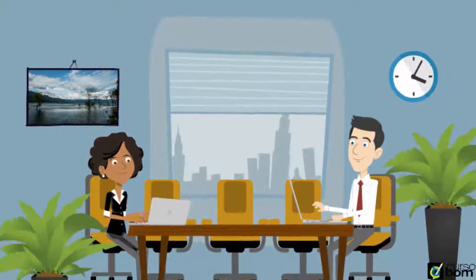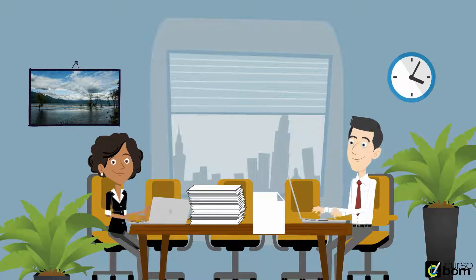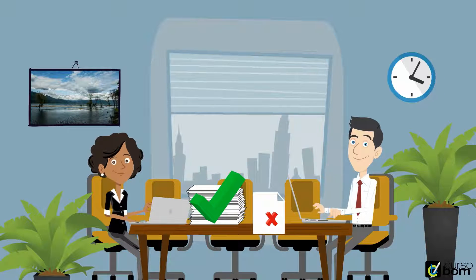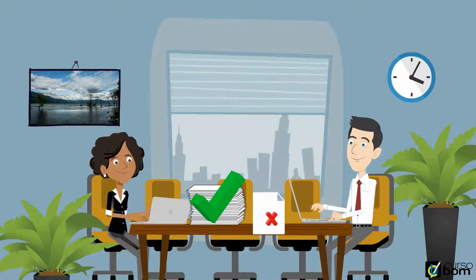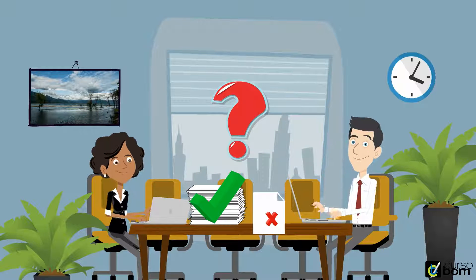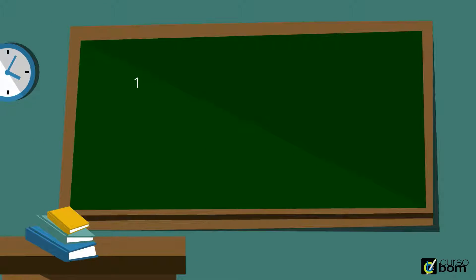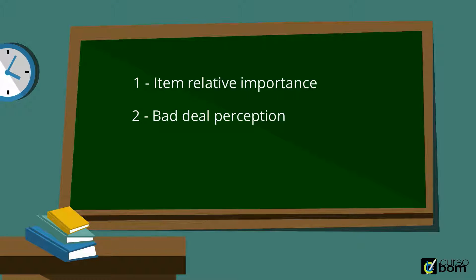But what if 99 items were agreed and only one is below the bottom line? Will the negotiation be successful? Not necessarily. It will depend on, first, the relative importance of the single item in comparison with the other 99. Second, how bad is the proposition for this item in the perception of the negotiation side not satisfied with the initial offer?